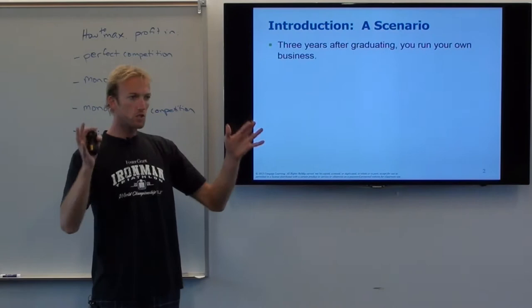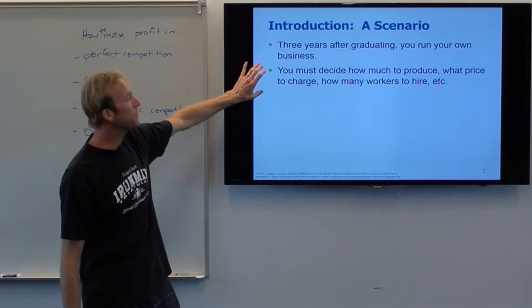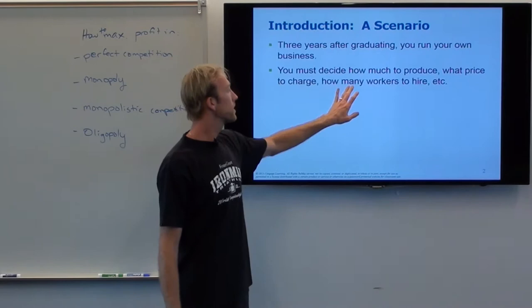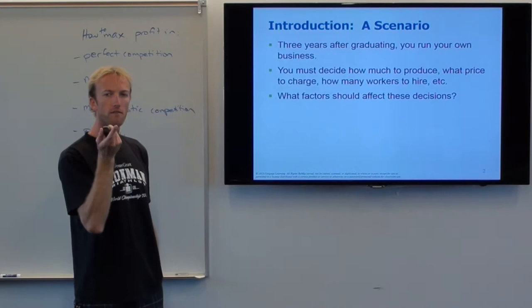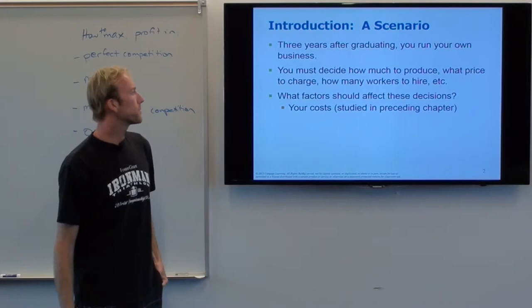Imagine that three years after graduating you're running your own business. Some things you have to decide: how much you're going to produce, what price you're going to charge, how many workers to hire. Ultimately, what you're trying to do is maximize profit. There's a type of firm that faces a lot of competition — it's called a perfectly competitive market — and that's what we're going to study right now.